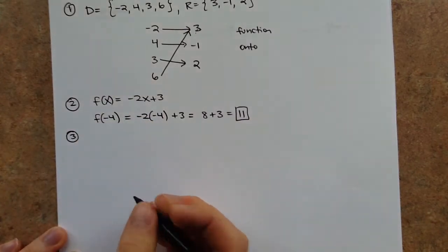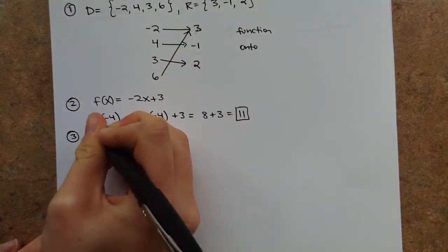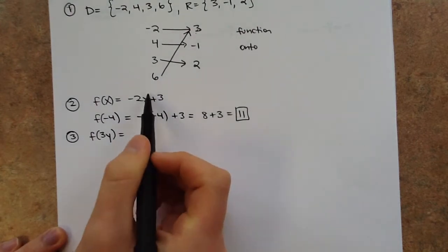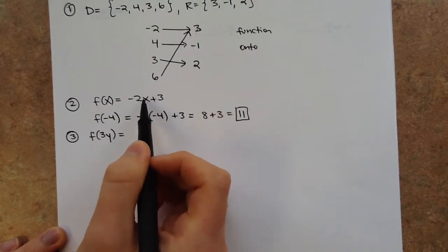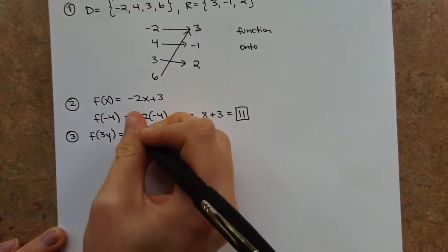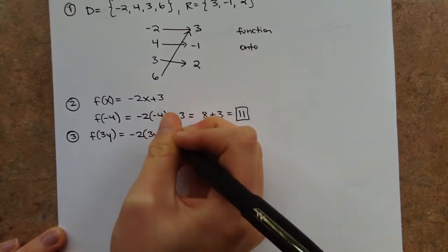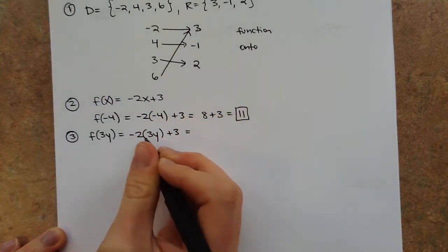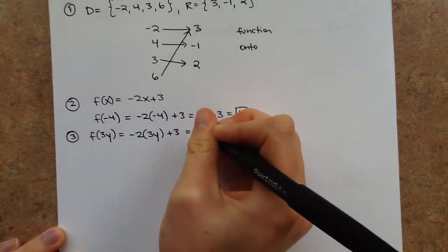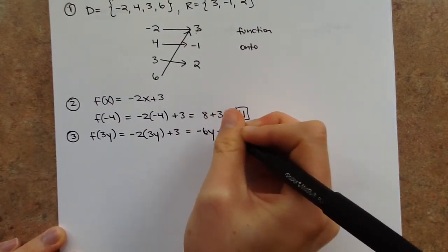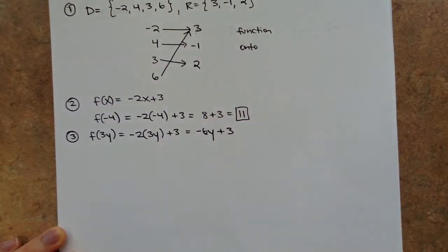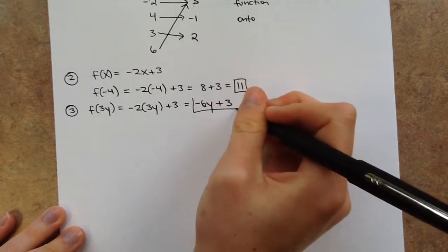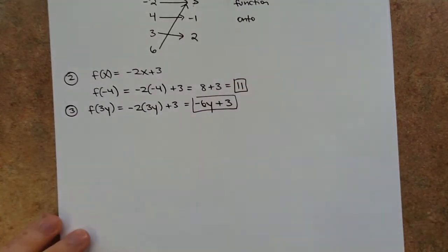For number 3, I want f(3y). Same thing — I replace the x with 3y in the equation. So negative 2 times 3y is negative 6y, and then plus 3. Since those aren't like terms, I can't combine a y with a constant. That's just my final answer for number 3.